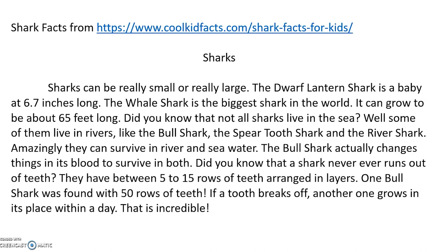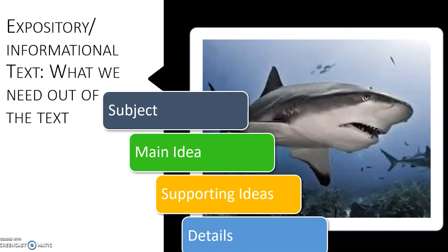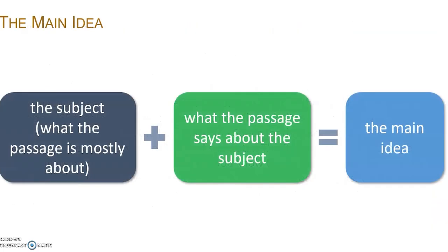Now let's think about what all of those pieces are that we need. We talked about the subject, the main idea, the supporting ideas, and the details. Our subject is what? That's right — it's sharks. So what's our main idea? To get to our main idea, we look at the subject, which we said was sharks. But then what is the passage saying about the subject? What was this passage telling us about the sharks?